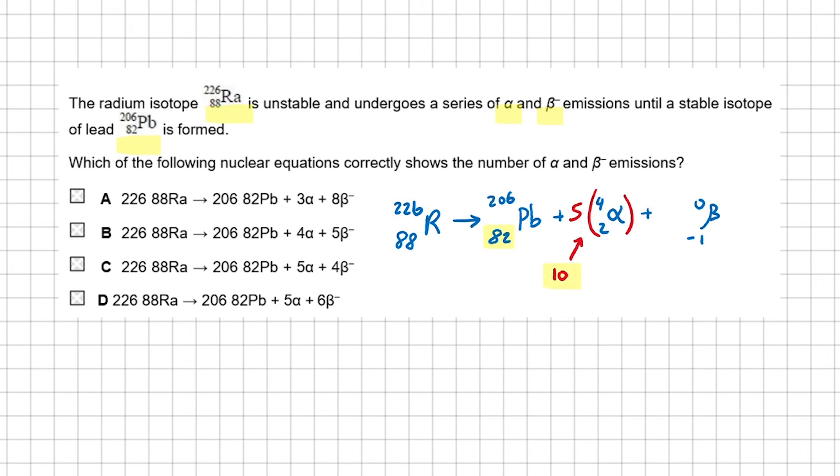We have 4 too many at the bottom on the right-hand side of the equation. So we need 4 beta decays to fully balance this equation. Our final answer is C.